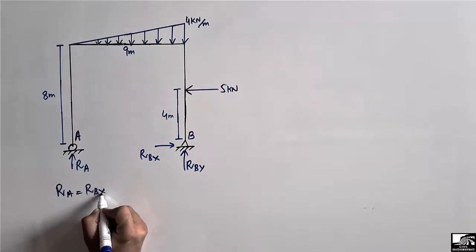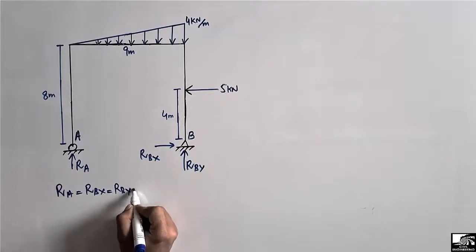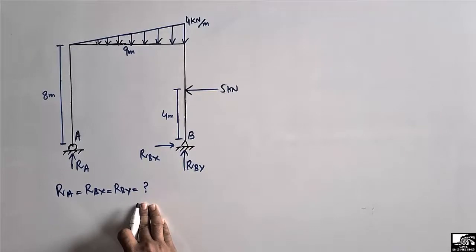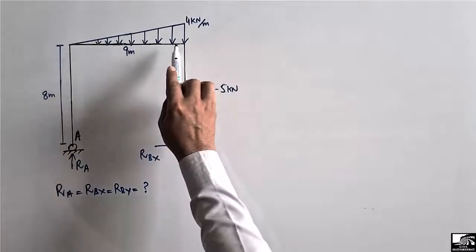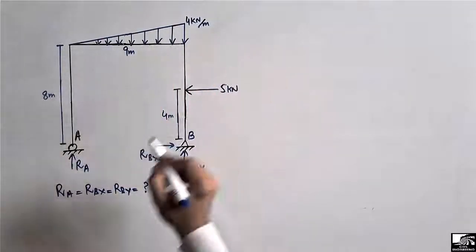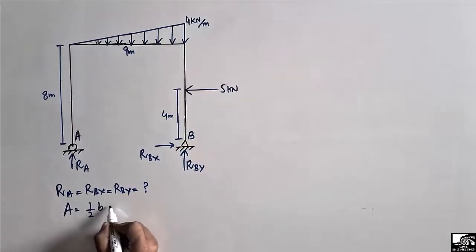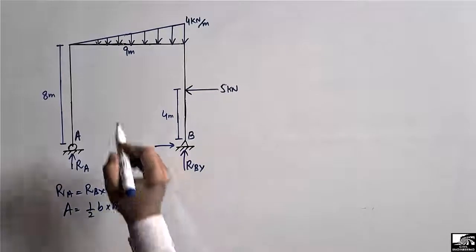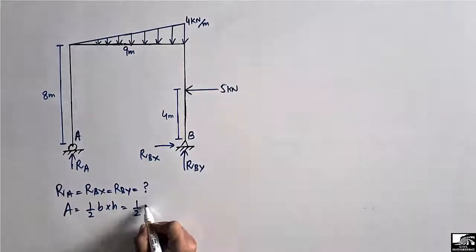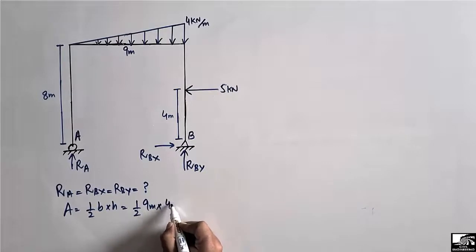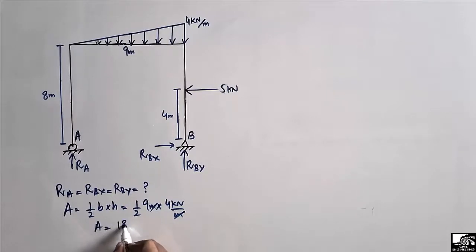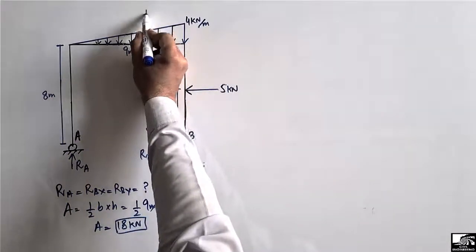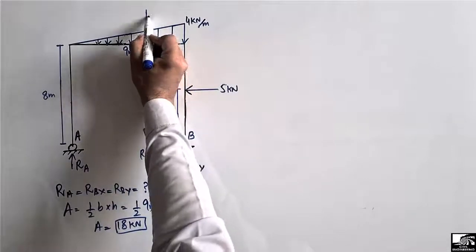We have three unknowns: Ra, Rbx, and Rby. To find these unknowns we first simplify the frame by finding the total point load from the triangular load. The area of the triangle equals half times base times height: half times 9 meters times 4 kilonewtons per meter equals 18 kilonewtons. So the equivalent point load is 18 kilonewtons acting at the centroid of this triangle.